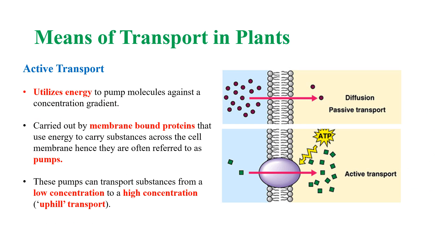Next is active transport. Active transport utilizes energy to carry substances across the cell membrane. It is often carried out by membrane-bound proteins that are also known as pumps. This figure shows the difference between diffusion and active transport. In diffusion, molecules are transferred from a region of higher concentration to a region of lower concentration, whereas in active transport, molecules are transported from a region of lower concentration to a region of higher concentration.